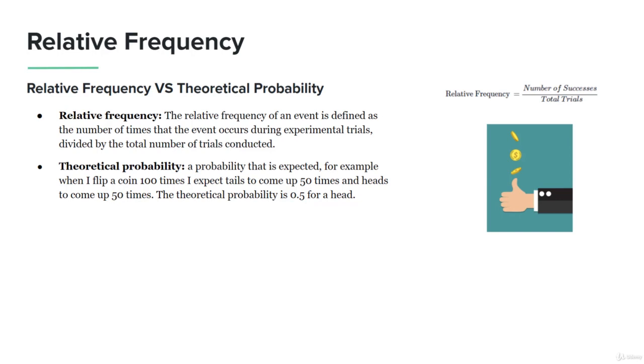So the theoretical probability would be one-third, because you have the ability for each one of those three different sides of the coin to show up at any given time.